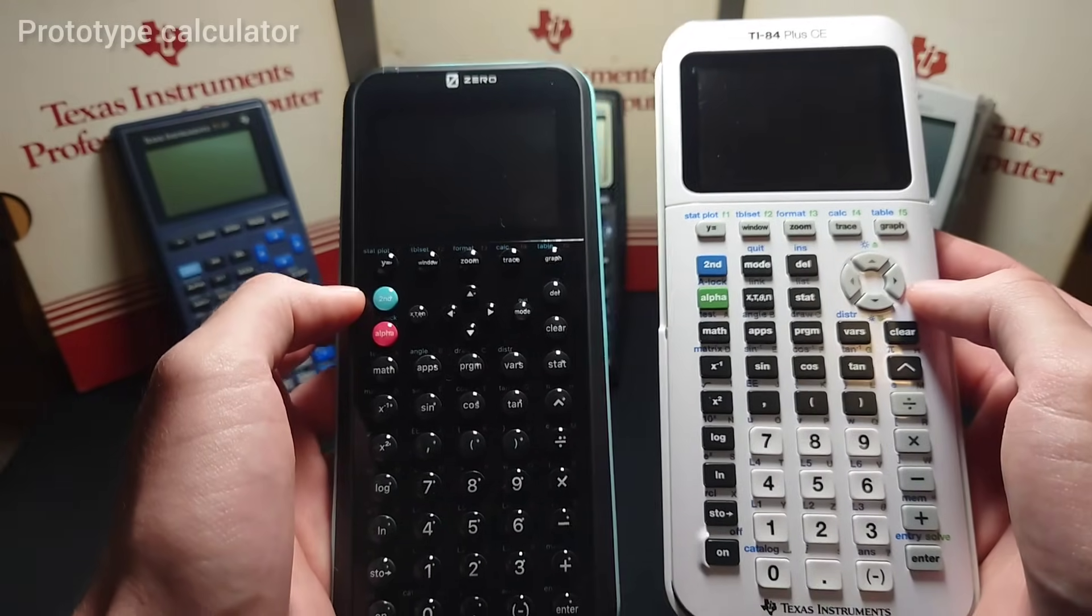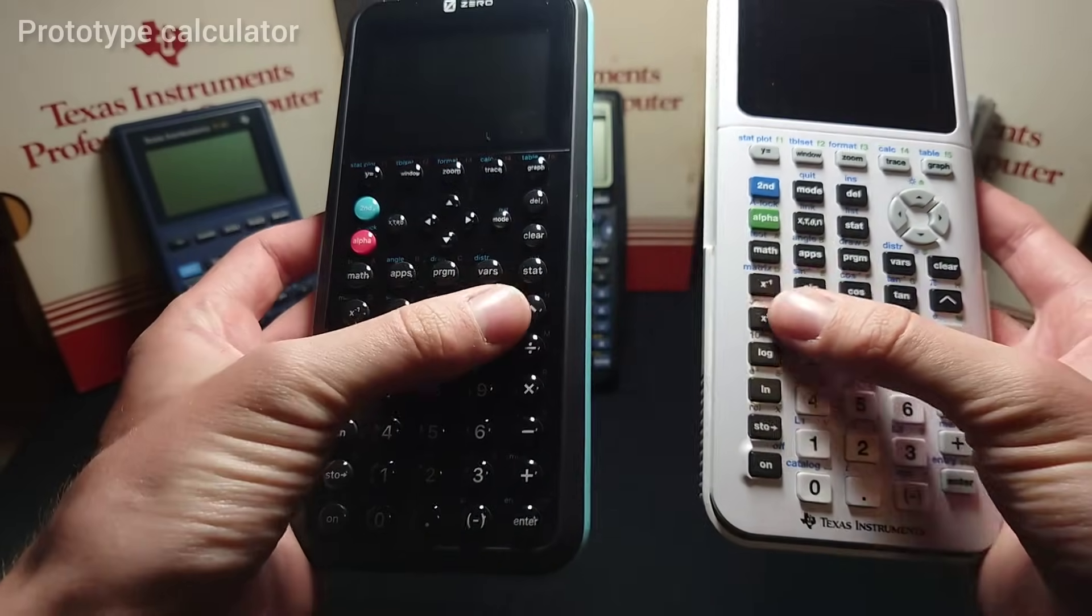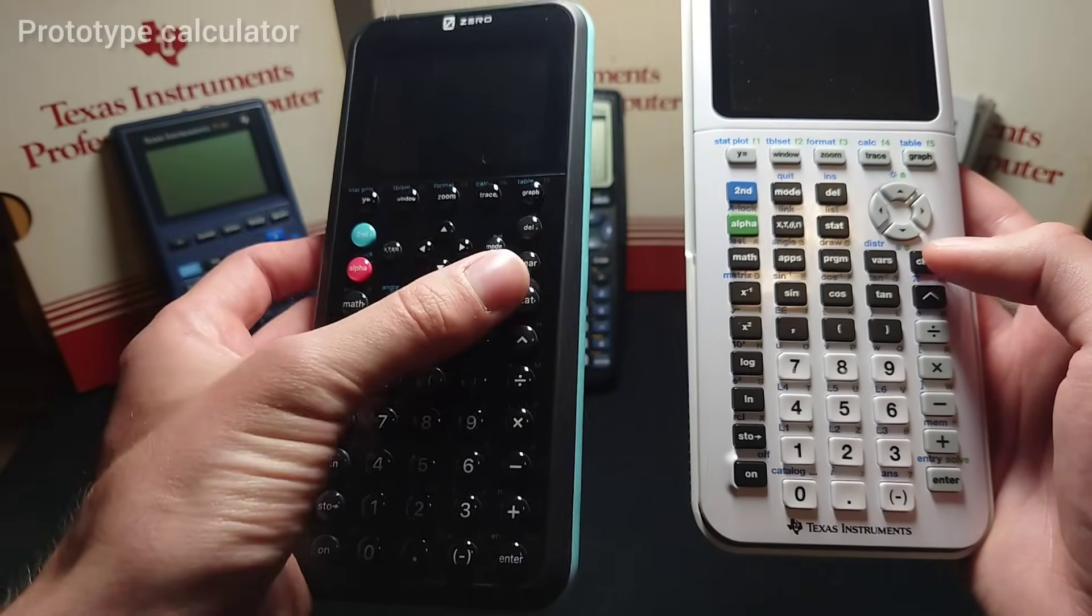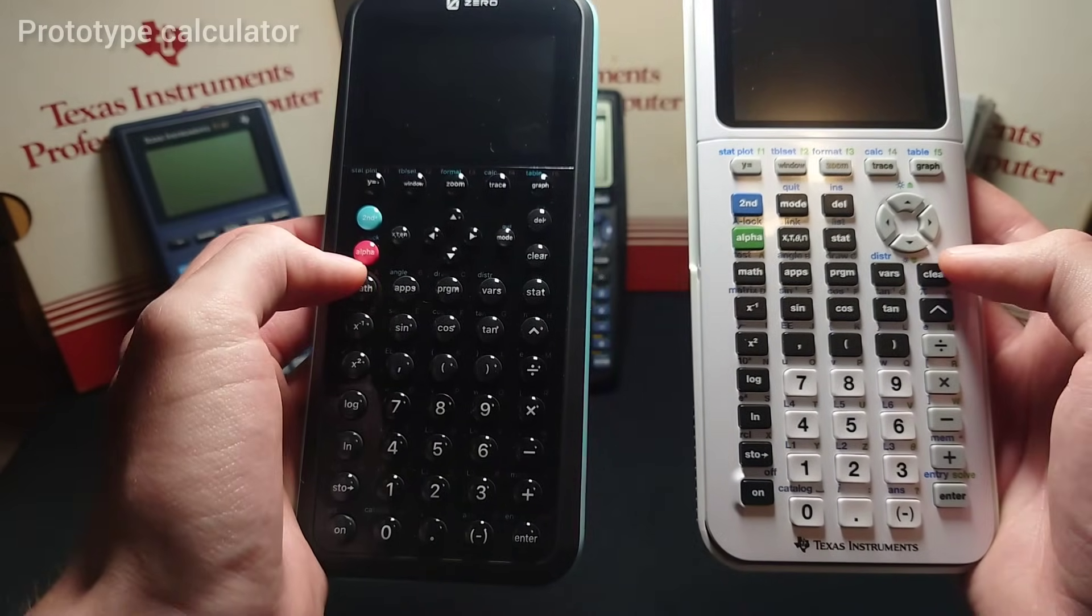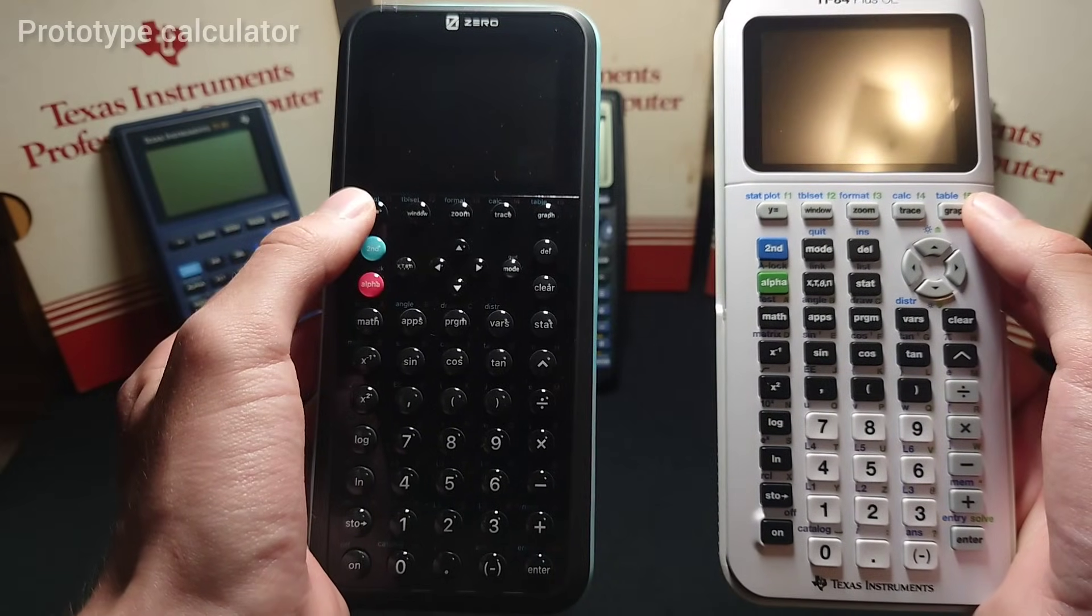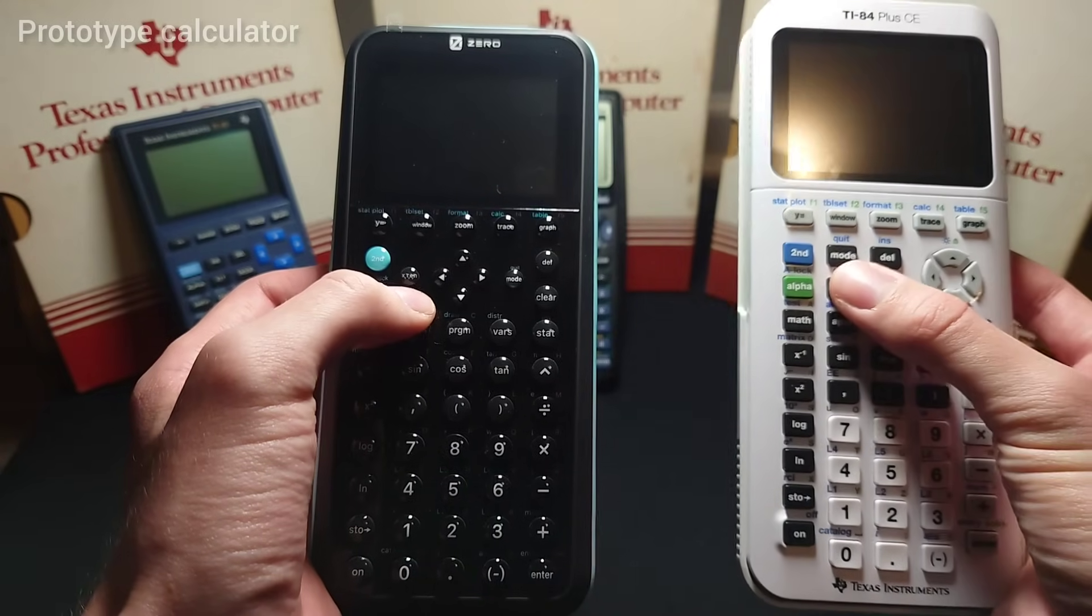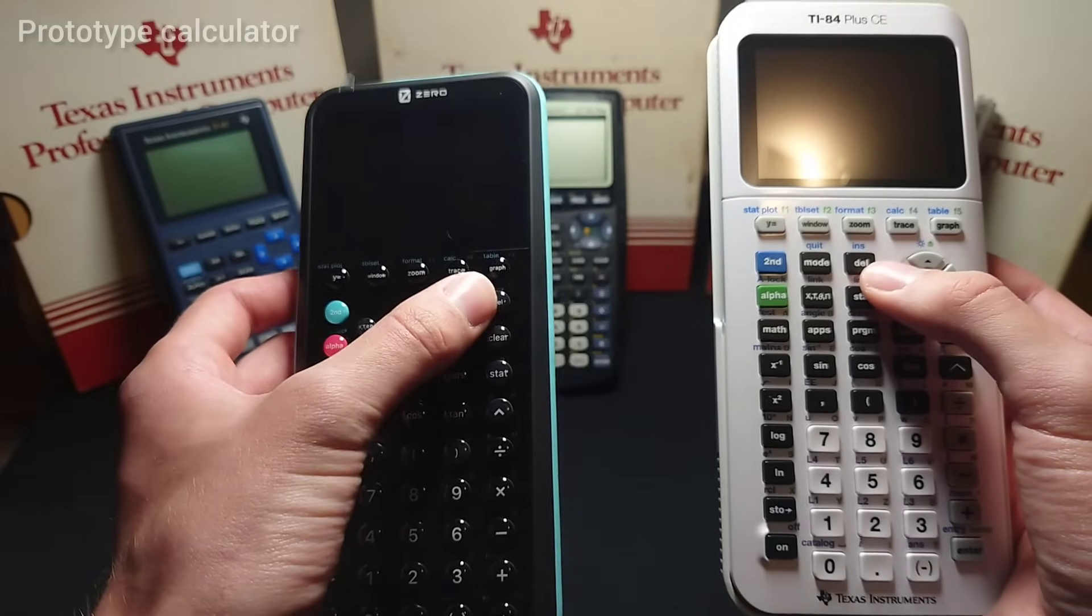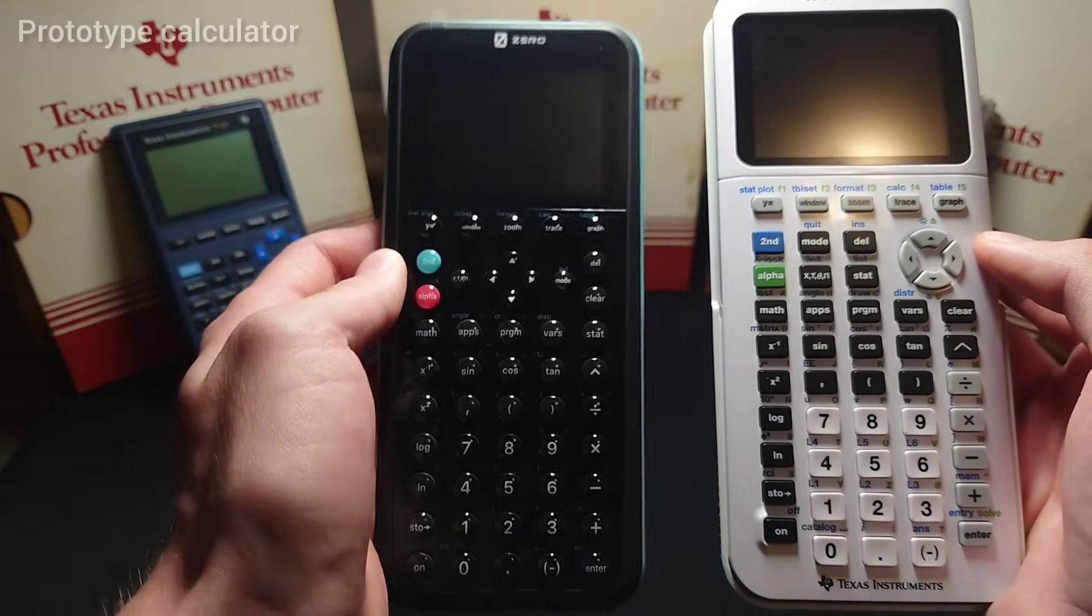Now another thing you'll notice is the design is a little bit different. However, from this point down, all of the buttons between these two calculators are exactly the same. On this row, the only thing that's different is the Clear button is moved up, and the Stat button is moved where Clear used to be. Other than that, this entire row is the same. Also, the top five buttons are in the exact same place. The only real thing that's moved are the arrow keys to the center, and Mode and XT Theta N are moved to either side of the arrow keys. Delete and Clear have been stacked on top of each other. That means all of the same buttons are here, they're just in a different location.